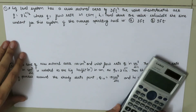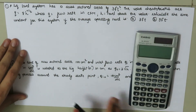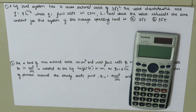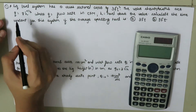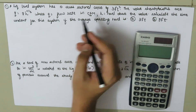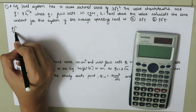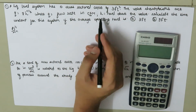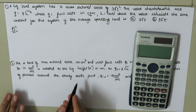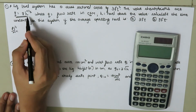Example one: A liquid level system has a cross-sectional area of 3 ft². The valve characteristic is Q equals 8·H^(1/2), where Q is volumetric flow rate in ft³/min and H is the liquid head above the valve in feet. Calculate the time constant for average operating levels of 3 feet and 9 feet.